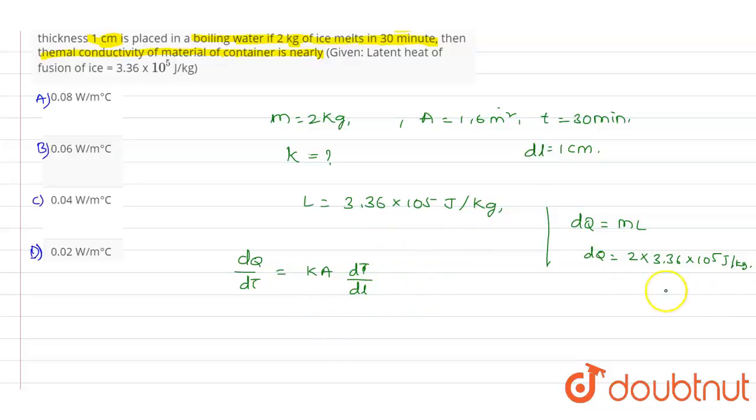So we can write the dQ divided by dt value as 2 into 3.36 into 10 power 5 divided by dt value. Dt value is 30 into 60.